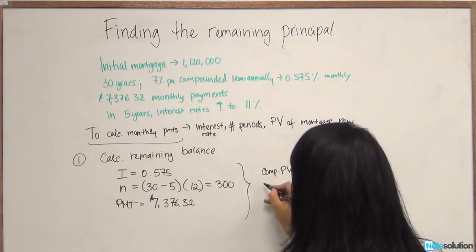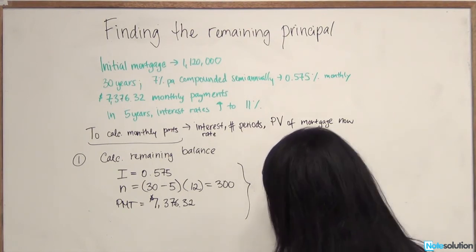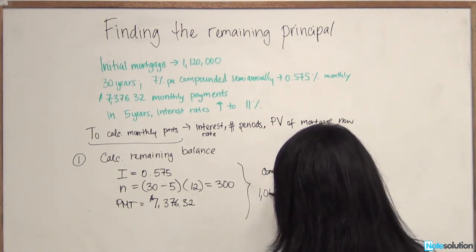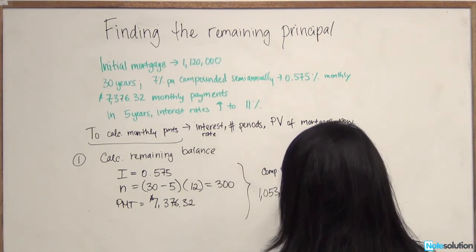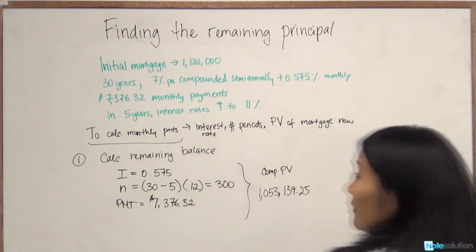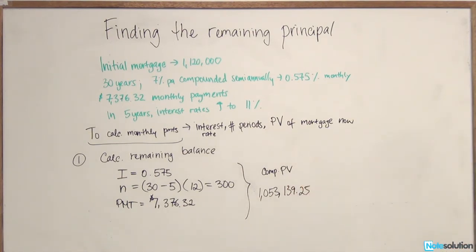We're going to put all this information to our financial calculator and we're going to hit compute present value. And it's going to give us a present value of $1,053,139.25. So what does that mean? After paying this mortgage for five years, he's paying $7,300 a month. After paying five years, he still has $1,053,000 remaining on this mortgage.